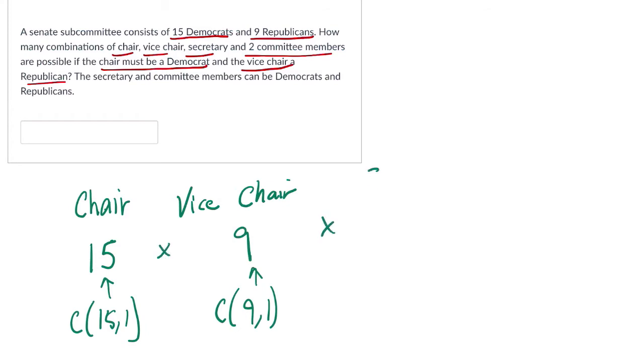Then for secretary, it could be from either party. Secretary. Okay, and there are, well, we picked one Democrat, one Republican, so there's 14 Democrats left, and 8 Republicans, but their party doesn't really matter, so 14 plus 8, there are 22 people left.